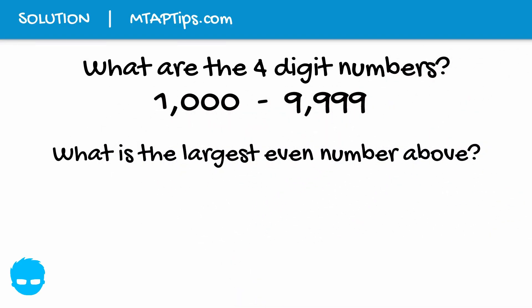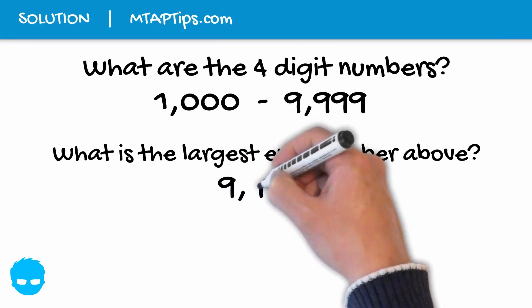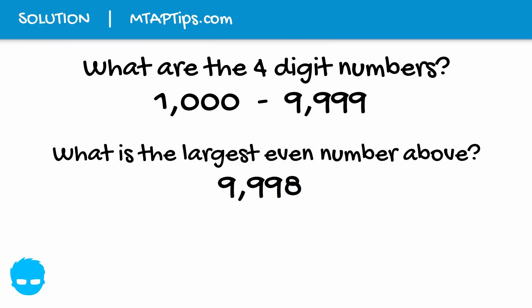What is the largest even 4-digit number? We know that the largest 4-digit number is 9,999, but that's not an even number because it ends with 9. So we just have to reduce 1 and we'll have 9,998, which is now an even number.